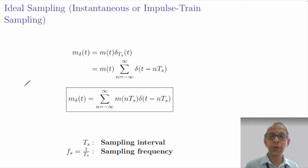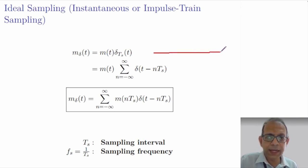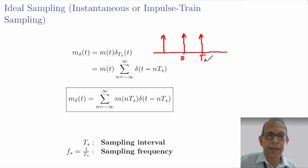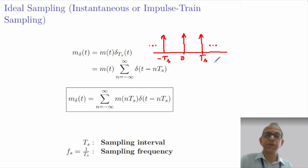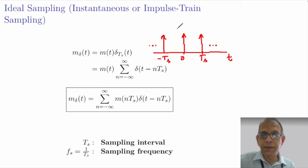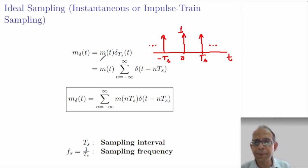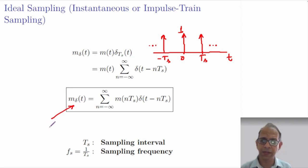Let us recall what we do in impulse train sampling. In it, we multiply the message signal with an impulse train, which can be pictorially depicted as a sequence of impulses each occurring at instances which are integer multiples of some Ts, called the sampling interval and also the period of the periodic impulse train. The strength of each impulse is 1. When such an impulse train multiplies the message signal, what results is the sampled version of the original analog signal — so we get a sampled signal.